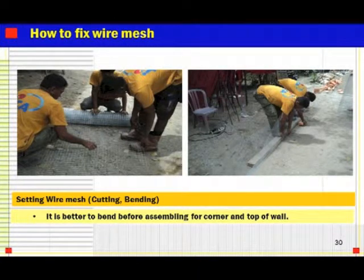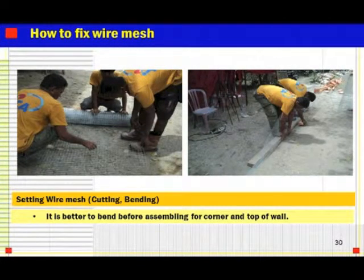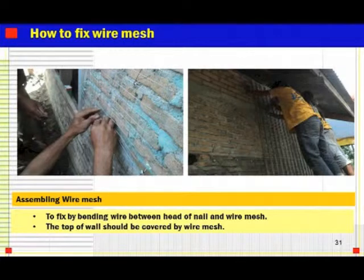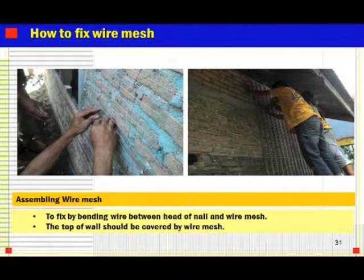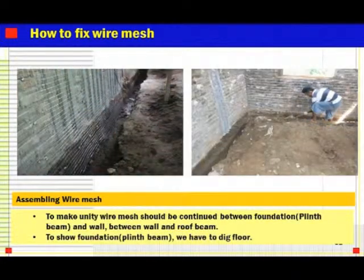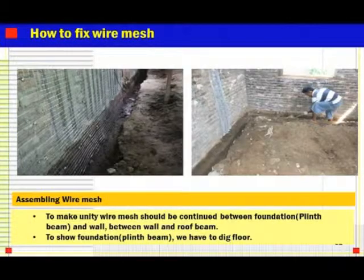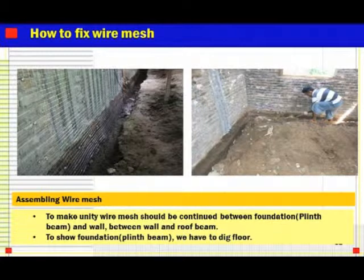Setting wire mesh — cutting and bending. Bending is for the corner parts. It is better to bend before assembling, for the corner and top of walls. To fix by bending wire between the head of the nail and wire mesh. The top of the wall should be covered by wire mesh to make it uniform — jacketing. To make unity, the wire mesh should be continuous between foundation, prince beam, walls, and between wall and roof beam.